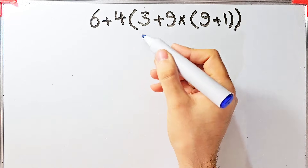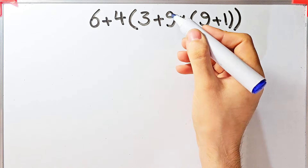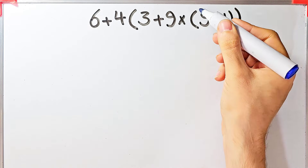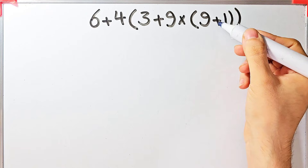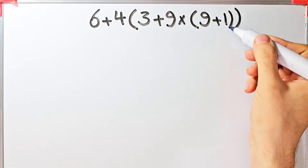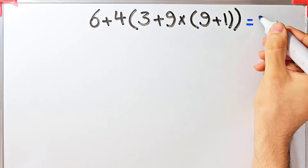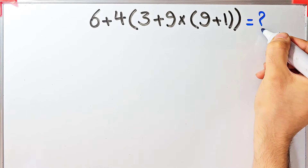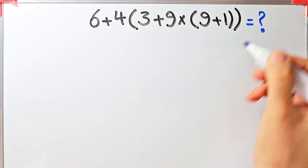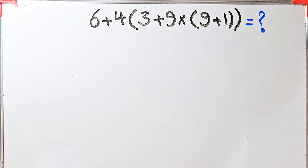Let's solve this question step by step together. The question is: 6 plus 4, then times 3 plus 9, then times open parentheses 9 plus 1 closed parentheses. What is the answer of this question? Can you solve it?